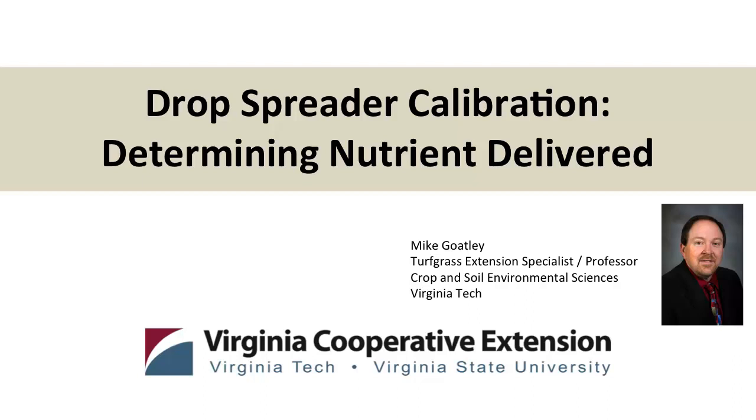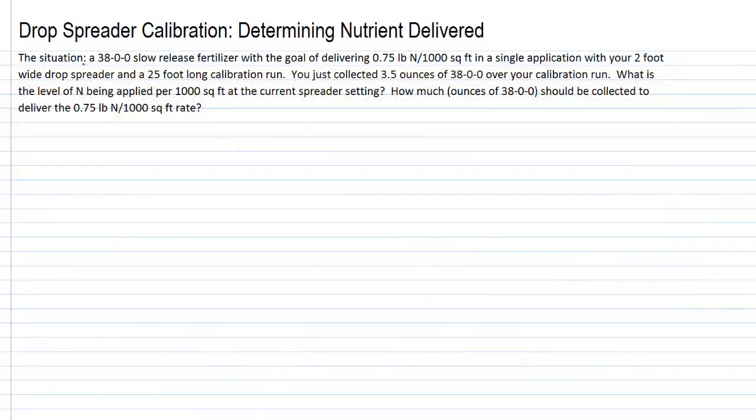Drop spreader calibration: determining the amount of nutrient being delivered. Our situation for this example is we have a 38-0-0 slow-release fertilizer and our goal is to deliver three-quarters of a pound of nitrogen per thousand square feet in a single application using a two-foot wide drop spreader and a 25-foot long calibration run.